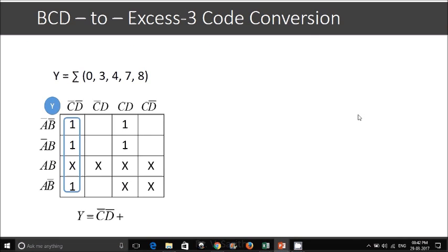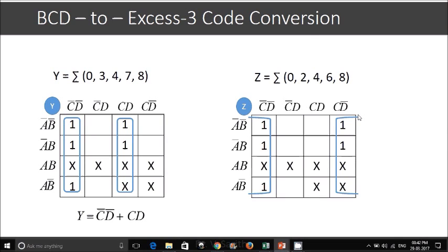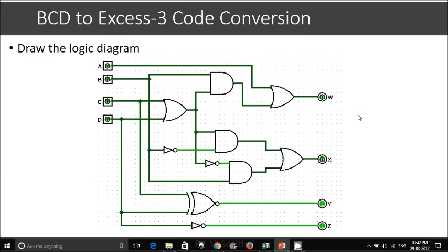And then Y, C bar D bar plus CD and Z will get D bar. Using these output expressions, we are going to give the logic diagram. This completes the design of BCD to XS3 code conversion.